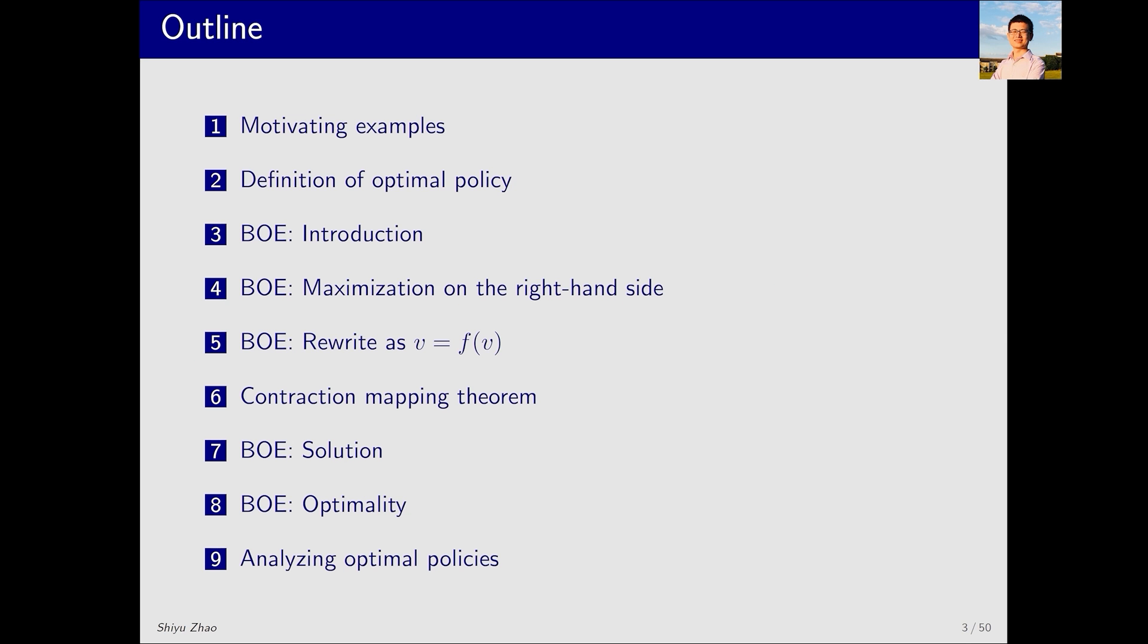This is the outline of this lecture. It might seem a lot, but each part is relatively short. I'll start with a brief introduction. First, I will present motivating examples, followed by definitions of optimal policy and optimal state value.